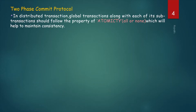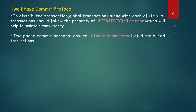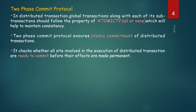Two-Phase Commit Protocol. In a distributed transaction, the global transaction follows one property — atomicity, all or none. Either all transactions will be completed or none. Achieving this atomicity helps to maintain consistency of our distributed database. Two-Phase Commit Protocol ensures atomic commitment of distributed transactions. It checks whether all sites involved in the execution of distributed transactions are ready to commit before their effects are made permanent — all sites must commit, otherwise the effects are not made permanent.